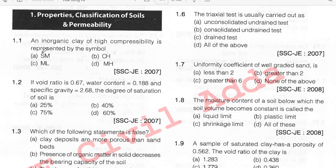An inorganic clay of high compressibility is represented by the symbol. So high compressibility clay — how do you denote? CH. So option B, CH.